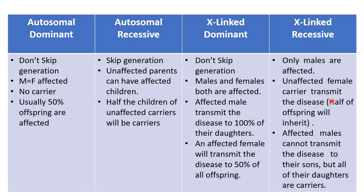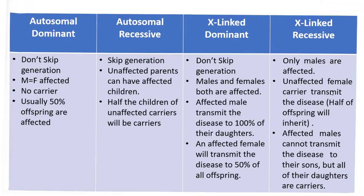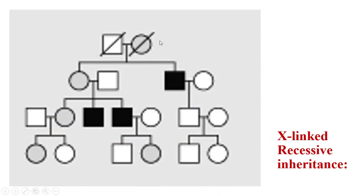For X-linked recessive, there are key rules: only males are affected and females are carriers. The carrier female transmits the disease to their offspring. Each offspring — male or female — has a 50% chance of inheriting the defective gene. The affected male cannot transmit the disease to their sons, but all daughters will be carriers. This will be explained in the next slide.